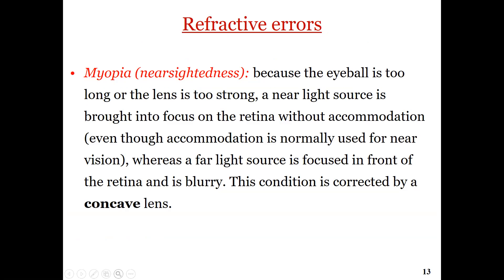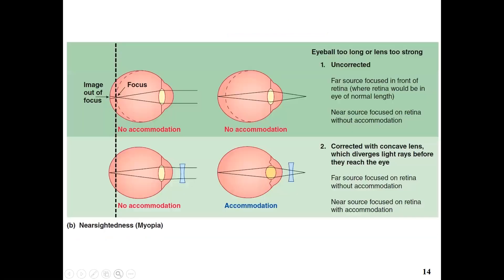Refractive error affects visual acuity. First, myopia or near-sightedness: in this situation, either the eyeball is too long or the lens is too strong. As a result, the far light source focuses in front of the retina, and the near light source focuses on the retina without accommodation, resulting in a blurry image for distant objects.